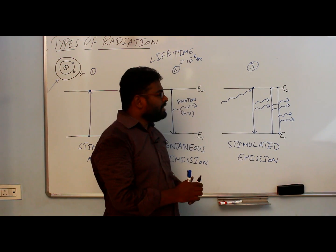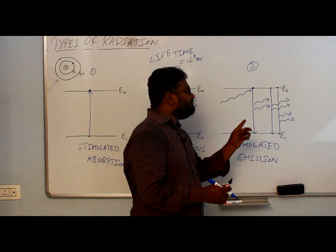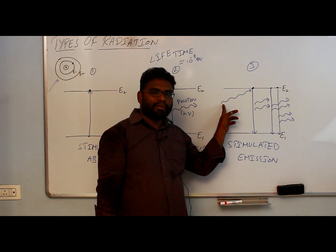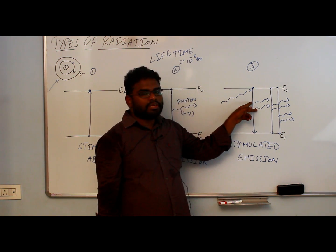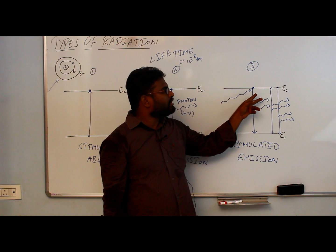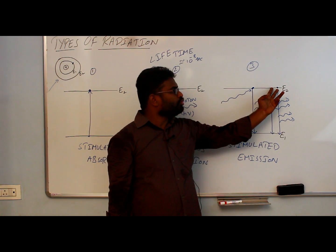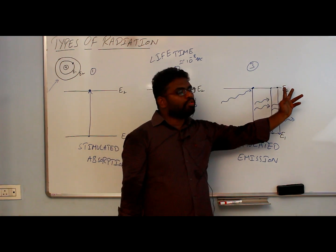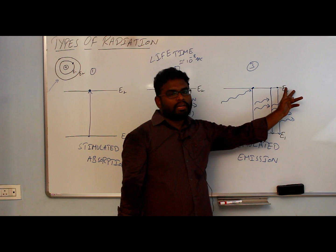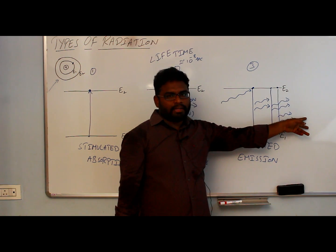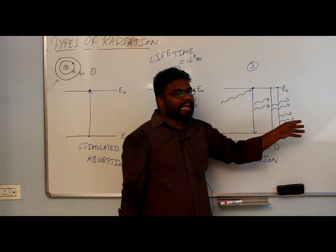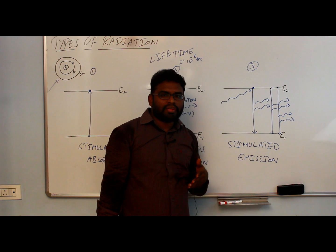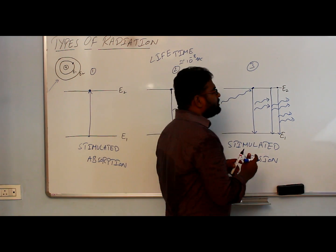Step by step we are supplying one photon and getting two photons. Those two photons go and stimulate two more electrons, becoming four; four stimulate four more, becoming eight. Step by step the light is amplified — the number of photons is increasing — so we can say the light is amplifying.